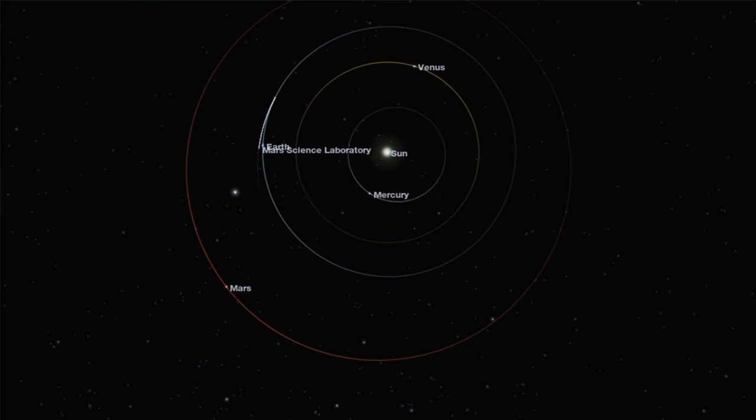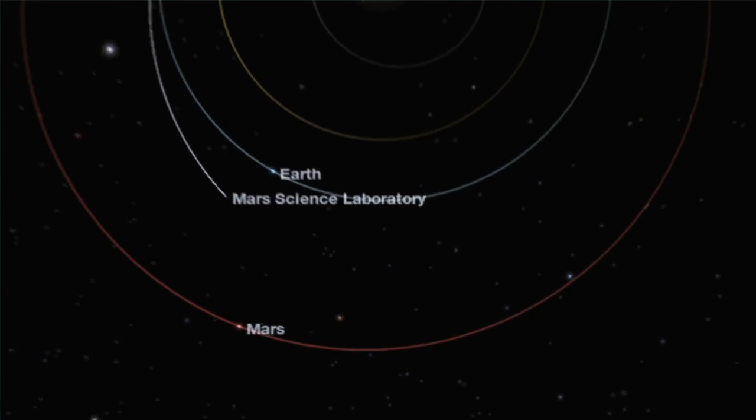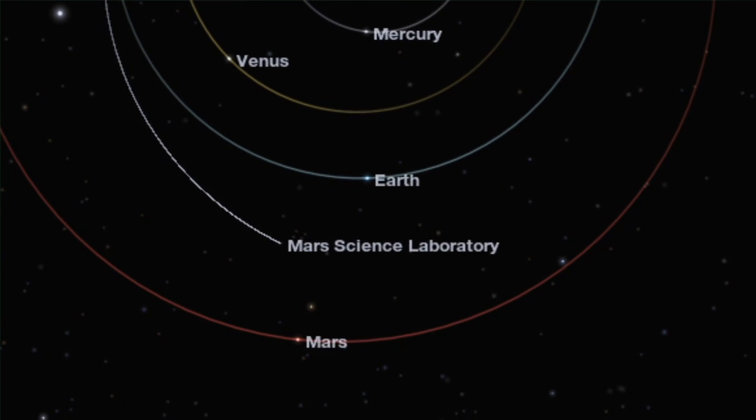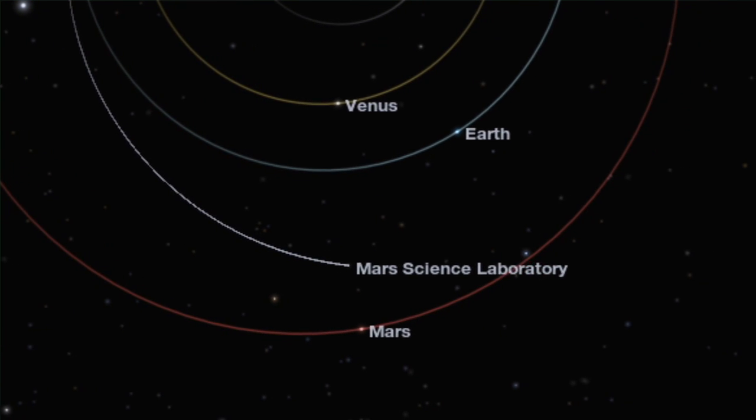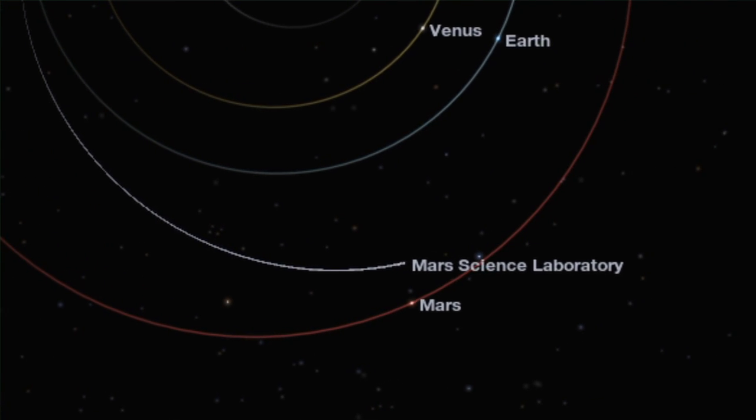One of the things that makes landing on another planet so difficult is that we're essentially trying to hit a moving target. The spacecraft left a planet that was spinning around the sun at its own speed, and we're now aiming for another planet. And we can't just aim for where the planet is at the time that we launch, but we have to aim for where we think the planet's going to be by the time that we get there.